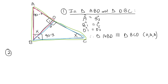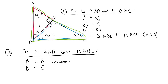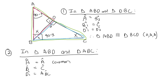Now let's work with the pink and the green triangle — triangle ABD and triangle ABC. Angle A in the pink is the same as angle A in the green because they are common. Angle B1 in the pink is the same as angle C in the green, both equal to X. And angle D1 in the pink is 90 degrees, the same as angle ABC in the green, which is also 90 degrees. Therefore, triangle ABD is similar to triangle ACB — angle, angle, angle.